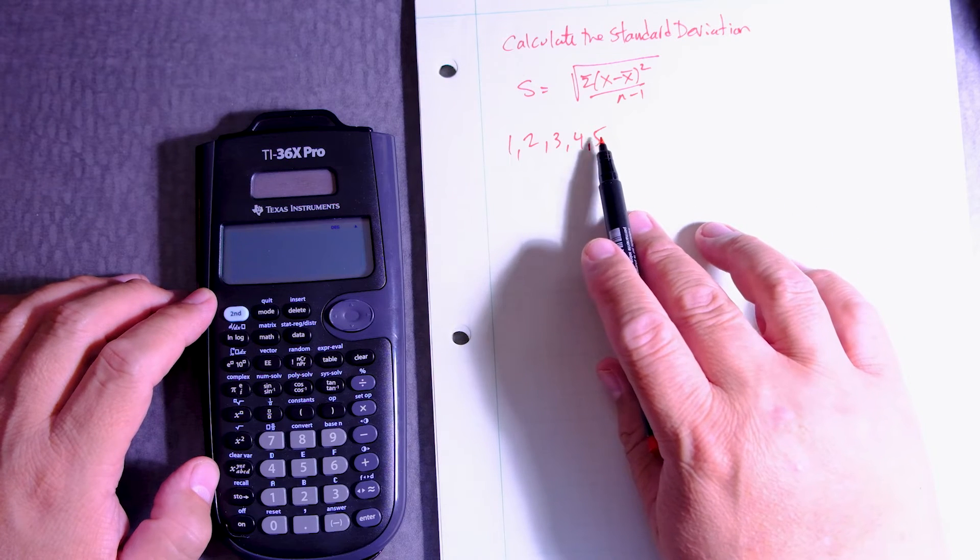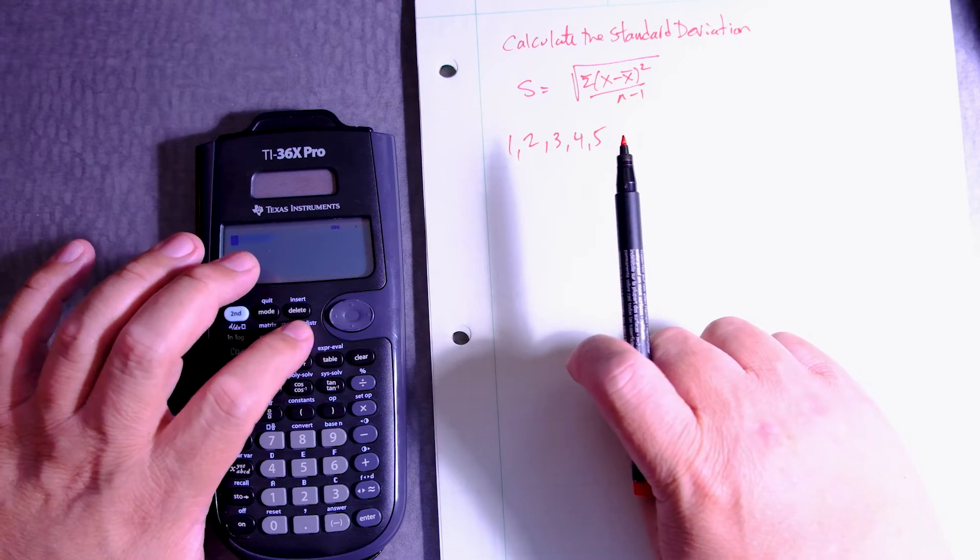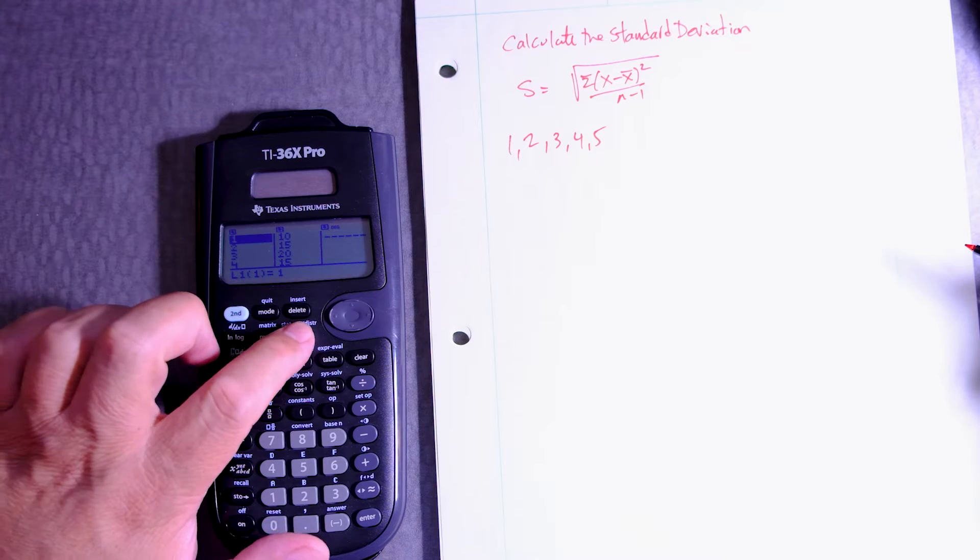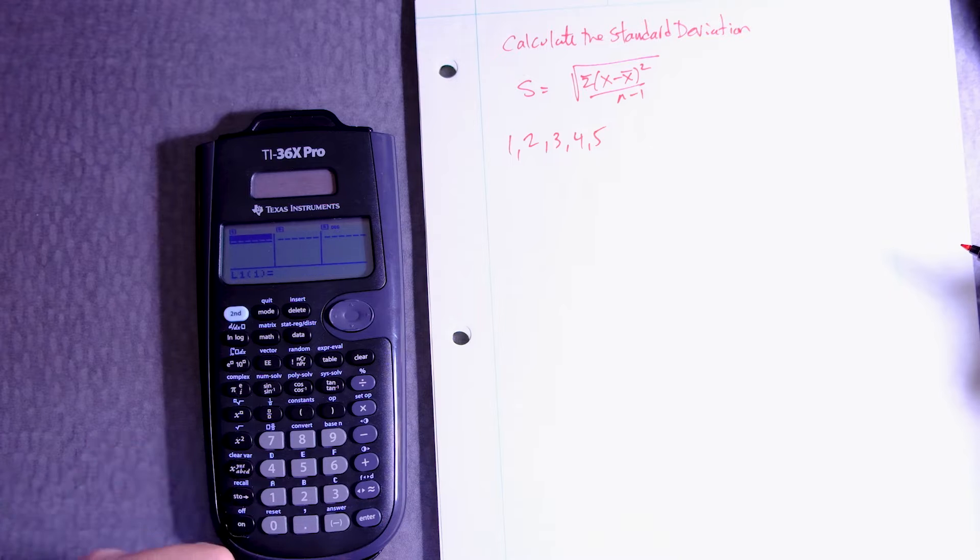We got to put these numbers, our data set, into the calculator. We press data. We're going to use list. We're going to press data again because we want to clear everything. We go all the way down. Clear. There.